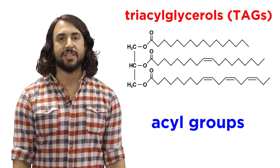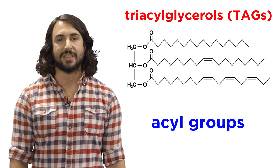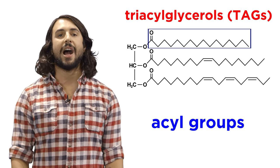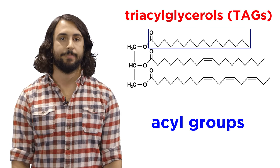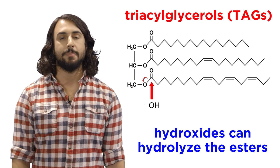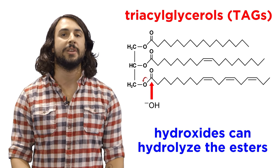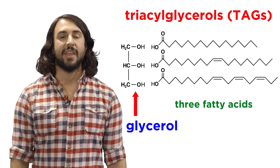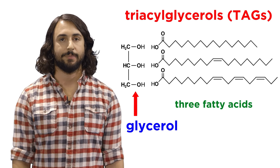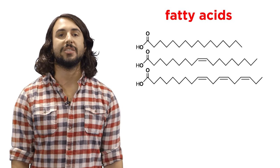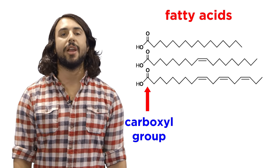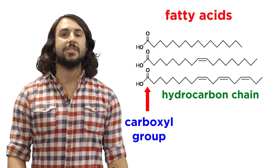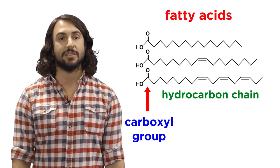These molecules can differ in the type of acyl groups they possess, which is this portion of the molecule, which will always be a hydrocarbon chain of some length. If these ester groups are hydrolyzed, meaning a hydroxide attacks each carbonyl kicking off this portion of the molecule, we get glycerol and three fatty acids. They're called fatty acids because they are carboxylic acids, but they also have long nonpolar hydrocarbon tails, which can vary depending on the TAG the fatty acid is derived from.